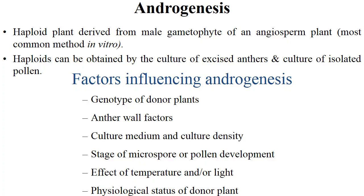Coming to androgenesis. In this, haploid plants are derived from the male gametophyte of angiosperm plants — that is in vitro haploid induction. Haploids can be obtained by culture of excised anthers and culture of isolated pollens. Factors influencing androgenesis include: genotype of the donor plant and anther wall factors, culture medium and culture density, stage of microspore or pollen development, and effect of temperature or light and physiological status of the donor plant.